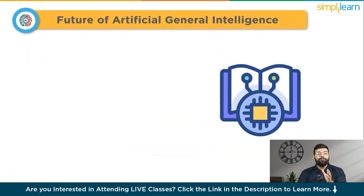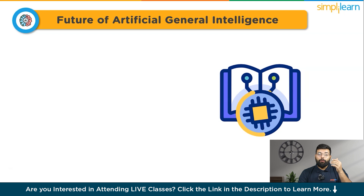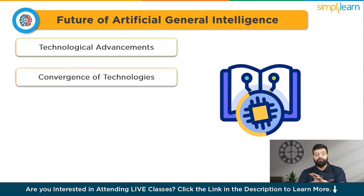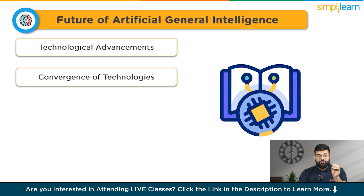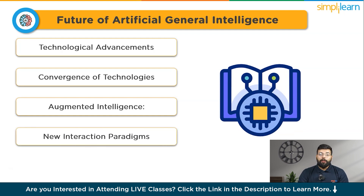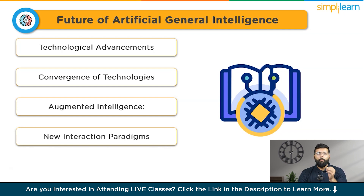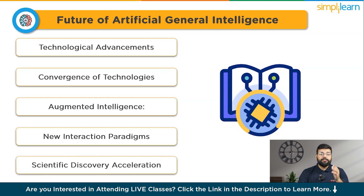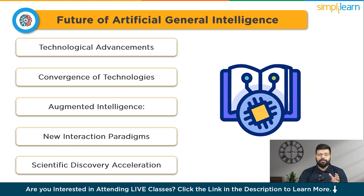Looking at the future of AGI, the rise of AI and cognitive sciences makes AGI a more tangible part of daily life. Interdisciplinary efforts combining AI, robotics, and biotechnology may accelerate its development. AGI has the potential to enhance human capabilities and accelerate problem-solving with its creative power. Advanced natural language processing will enable more intuitive interactions between humans and machines, revolutionizing communication. AGI could also speed up scientific processes by taking over data analysis and intellectual tasks.